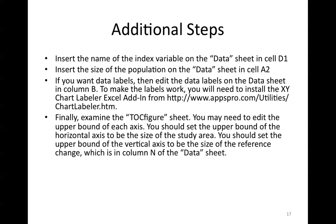If you would like to have data labels, then edit them on the datasheet in column B. However, you may need to install an Excel add-in. Finally, examine the TOC Figure sheet. You might need to edit the upper bound of each axis. You should set the upper bound of the horizontal, or x-axis, to be the size of the study area, and the upper bound of the vertical, or y-axis, to be the size of the reference change, which is in column N of the datasheet. You will notice that the TOC generator creates both an ROC and a TOC figure. I will show the ROC figures first, and then compare them with the TOC figures.